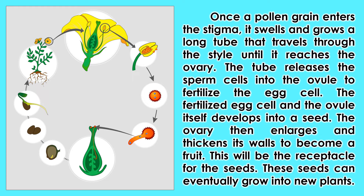Once a pollen grain enters the stigma, it swells and grows a long tube that travels through the style until it reaches the ovary. The tube releases the sperm cells into the ovule to fertilize the egg cell. The fertilized egg cell and the ovule itself develops into a seed. The ovary then enlarges and thickens its walls to become a fruit. This will be the receptacle for the seeds, and these seeds can eventually grow into new plants.